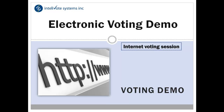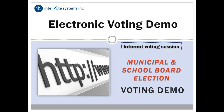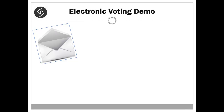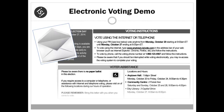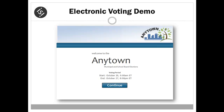The following is an automated demonstration of Intellivote's e-voting system that provides an example of an online e-voting session. To begin, the elector will refer to their voter instruction letter received in the mail for the Intellivote e-voting website address to access the online vote.